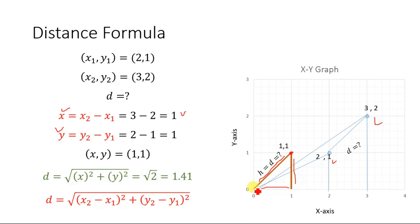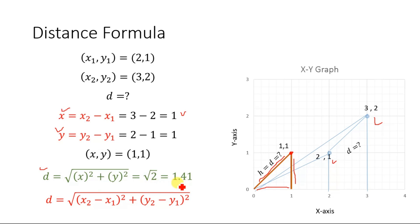According to the Pythagorean theorem, d squared equals base squared plus perpendicular squared. Taking the square root of both sides, we get d equals the square root of x squared plus y squared. Substituting the values for x and y, we get the square root of 2, which equals 1.41 — the same result as before.